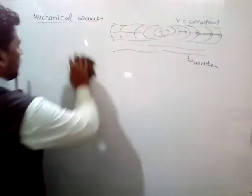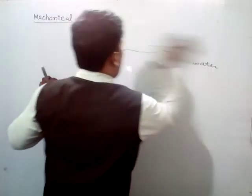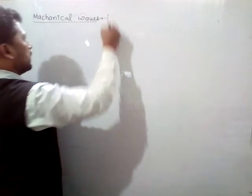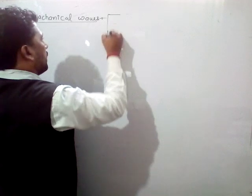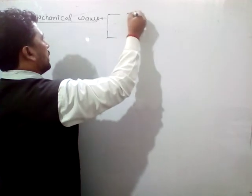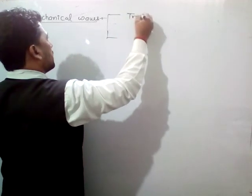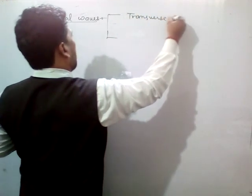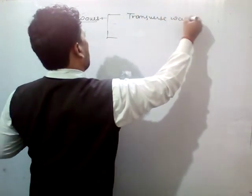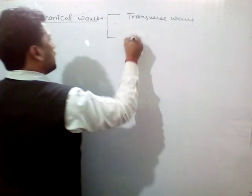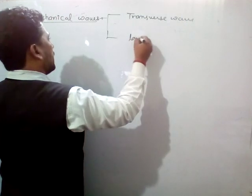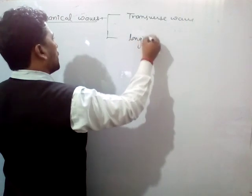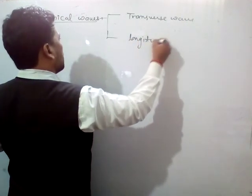So mechanical waves are of two types. Number one is transverse waves, and the second one is longitudinal waves.